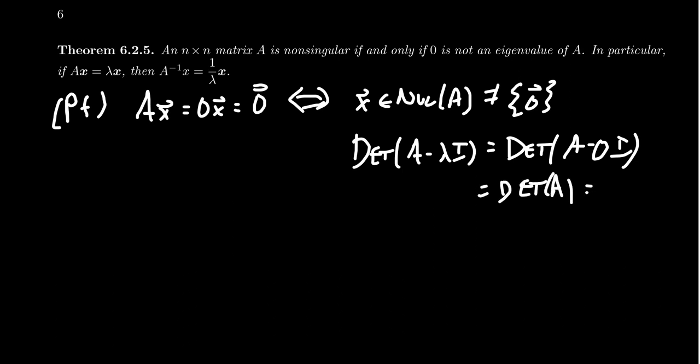If this was an eigenvalue, this should be 0. And as we've seen before, a matrix is singular if and only if its determinant is 0. So we can't have 0 as an eigenvalue for a non-singular matrix.